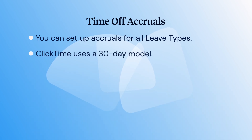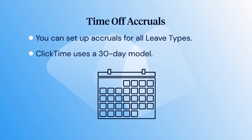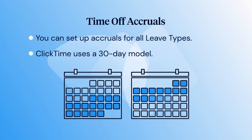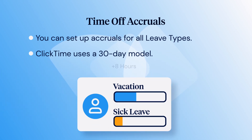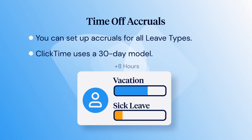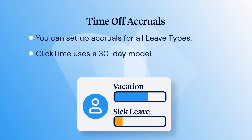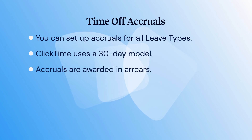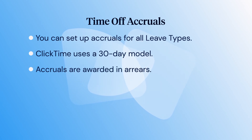ClickTime uses a 30-day accrual model, meaning that users start accruing hours on a particular date of a month and complete that accrual 30 days later. Accruals are awarded in arrears, meaning that hours are awarded after the previous accrual period has been completed.